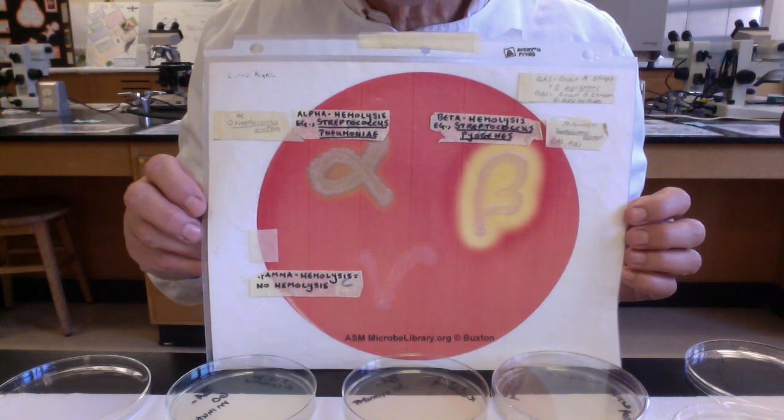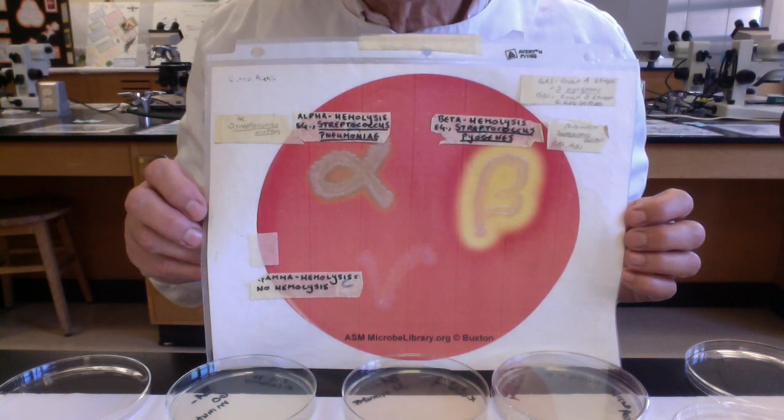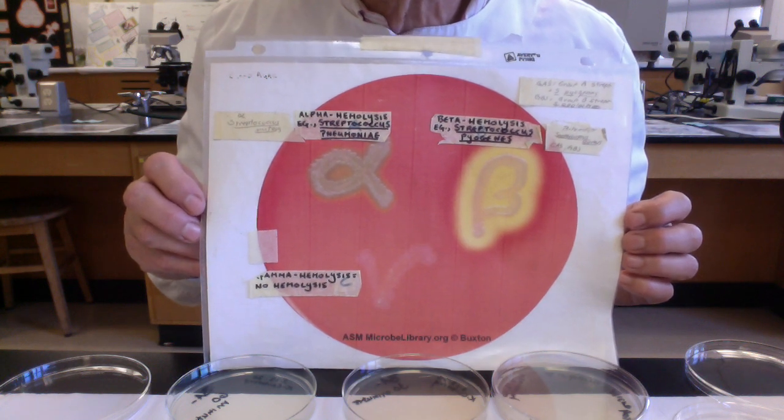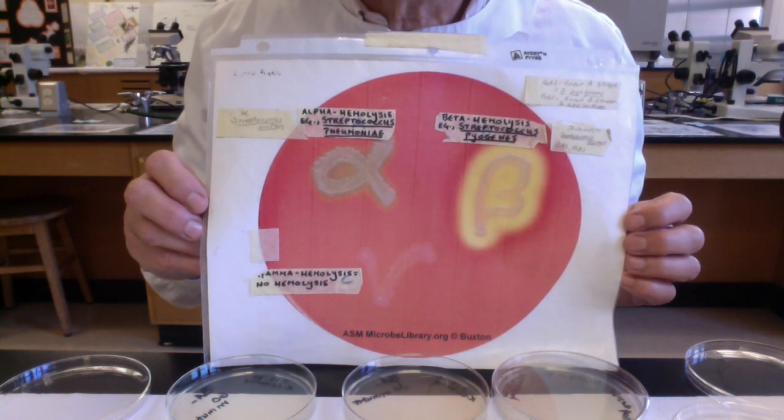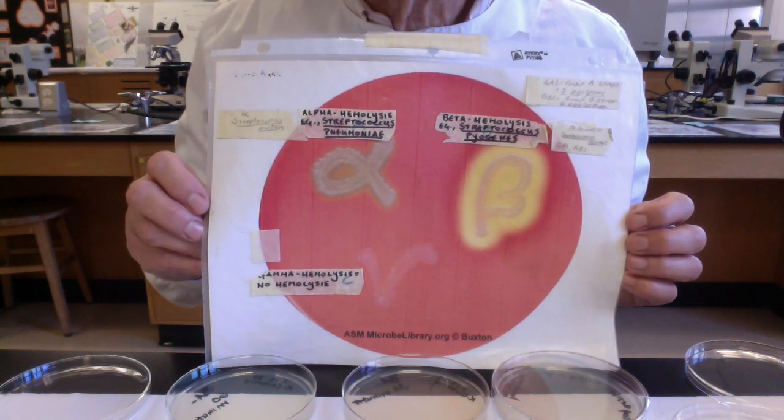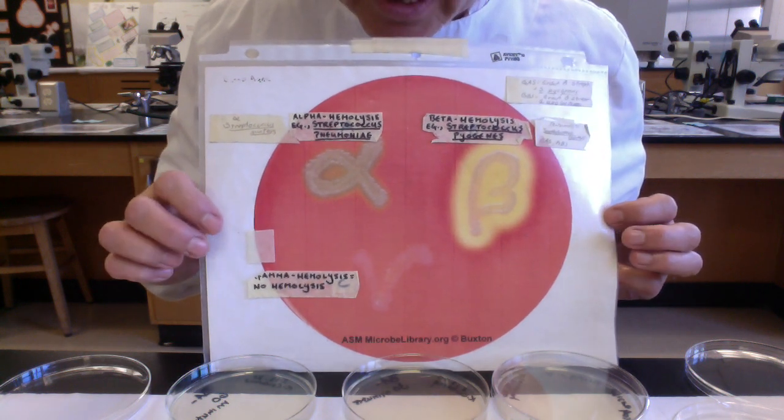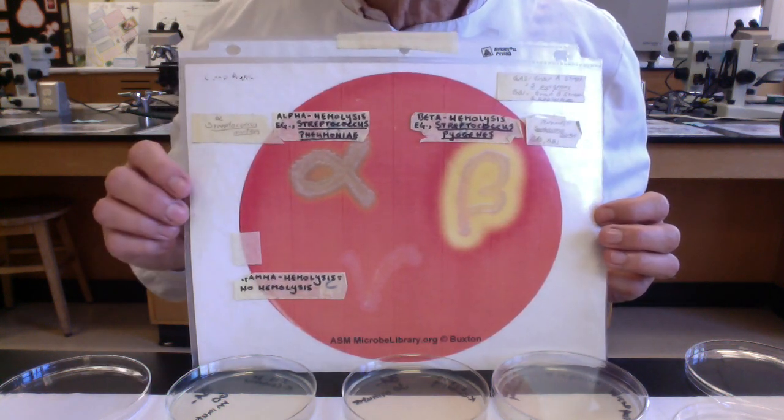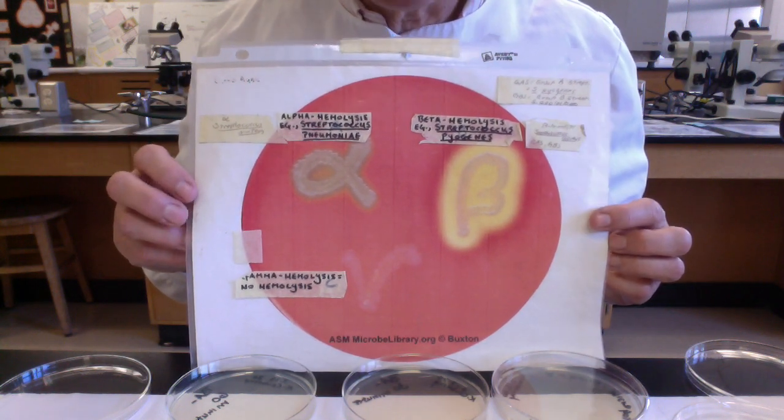So again, folks, the three beta hemolytic gram-positive bacterial pathogens to know: Staphylococcus aureus, Streptococcus pyogenes, also known as group A streptococcus, and then our group B streptococcus, the Streptococcus agalactiae. And then, folks, most microbes, as we said, don't cause hemolysis, so most microbes we would call gamma hemolytic.